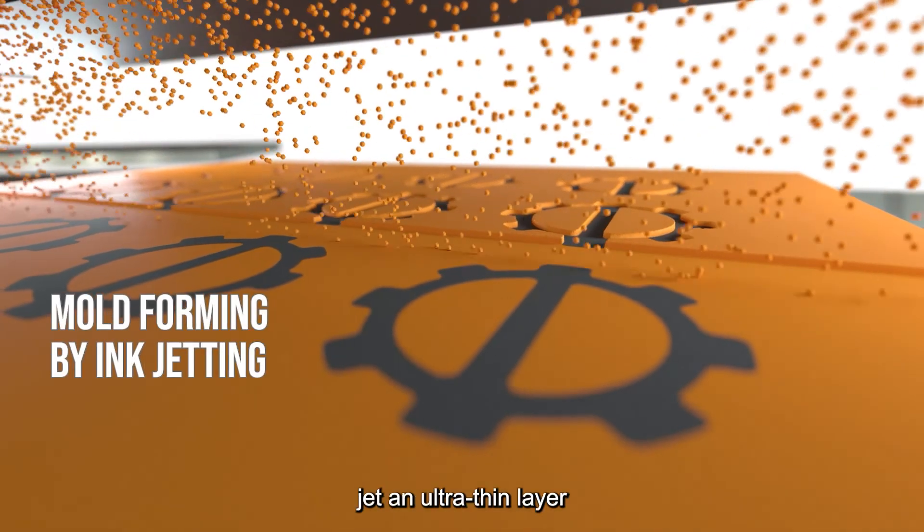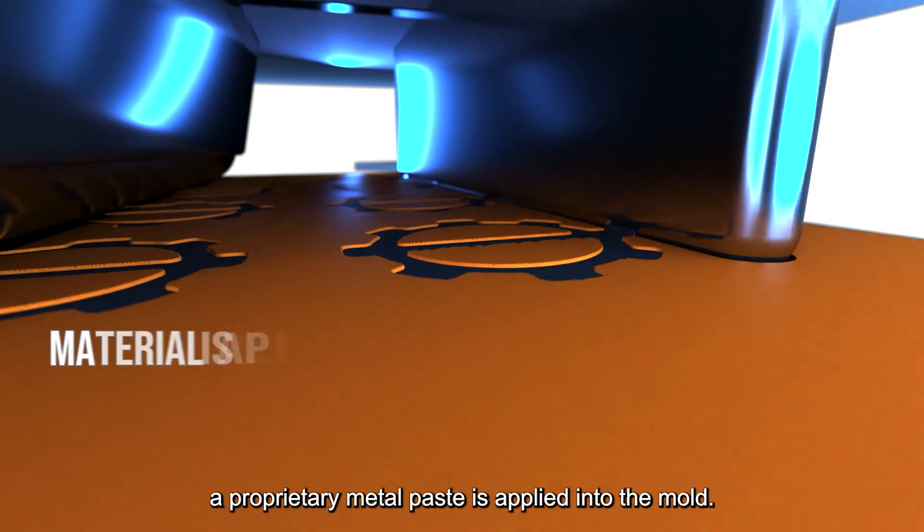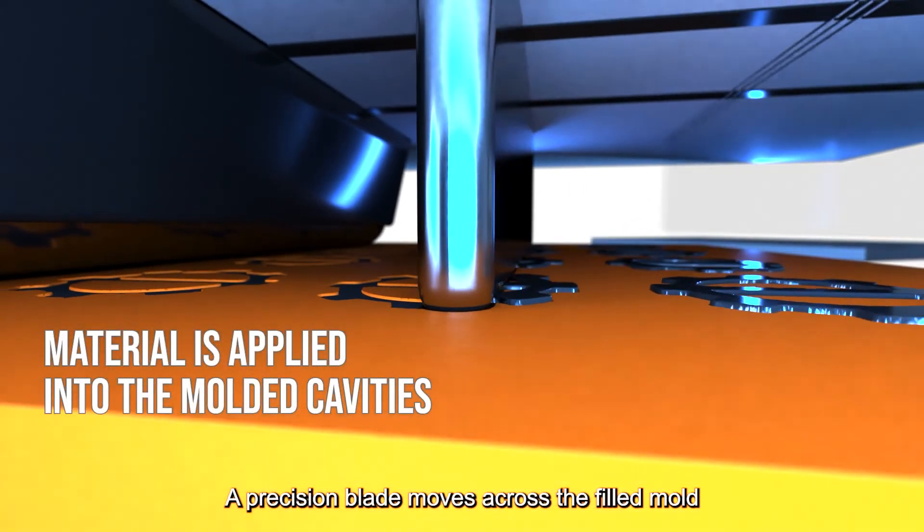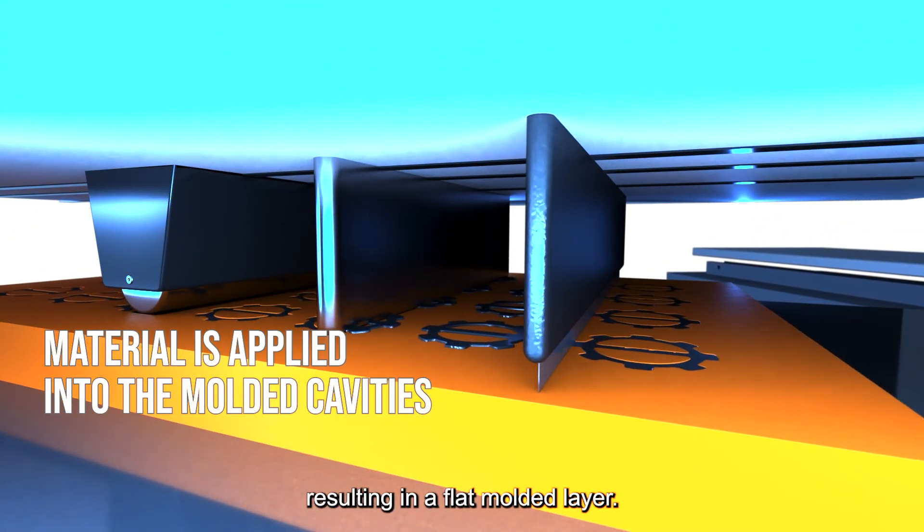High-resolution printheads jet an ultra-thin layer, creating a layer mold. In the next station, a proprietary metal paste is applied into the mold. A precision blade moves across the filled mold and wipes the excess paste, resulting in a flat molded layer.